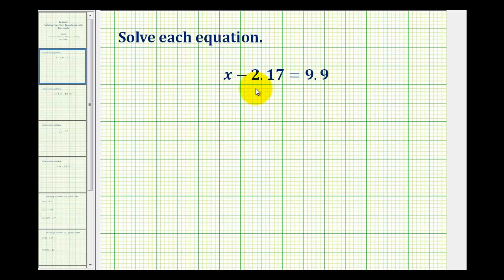We have x minus 2.17 equals 9.9. So to solve a linear equation, our goal is to isolate the variable on one side of the equal sign. Looking at this equation, we want to manipulate this so that it's in the form of x equals some number. But right now, we have x minus 2.17 on the left side of the equation. So we want to undo or perform the opposite operation of minus 2.17 in order to isolate the variable.